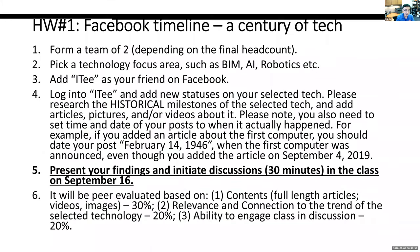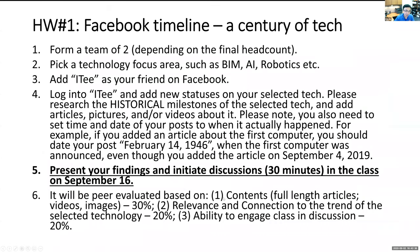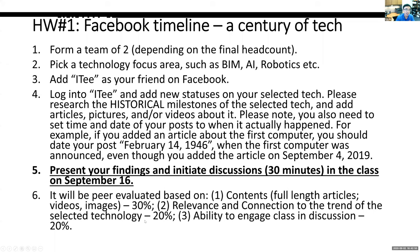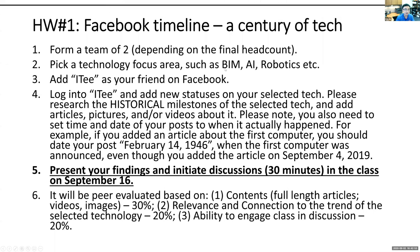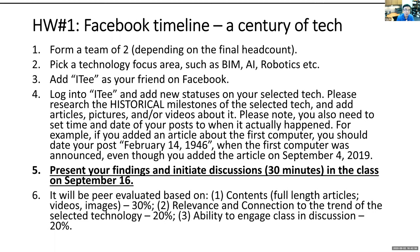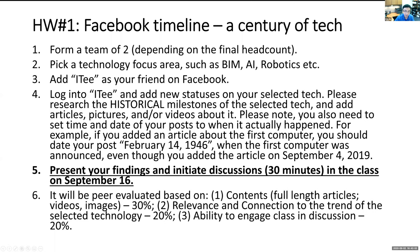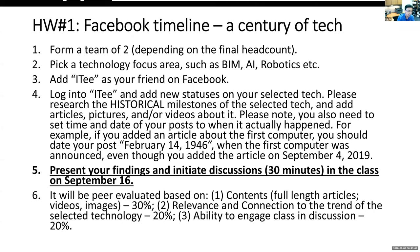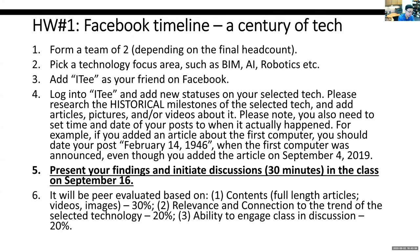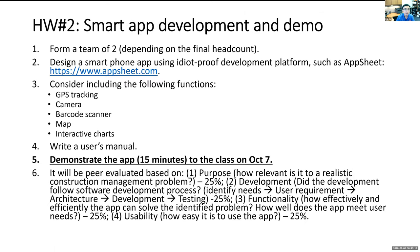The first homework is peer evaluated based on: contents — whether you include articles, videos, and images (30%); relevance and connection to the trend of the selected technology (e.g., if you pick BIM, your milestone should relate to BIM); and ability to engage the class in discussion — whether others agree or disagree with your selected technology.